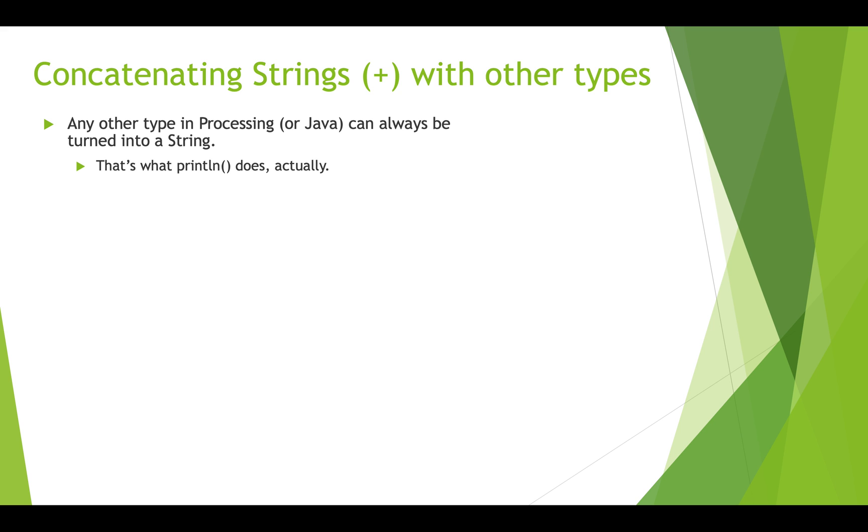So you can actually concatenate strings with other types. And that's what the print line statement actually does. And you've actually probably seen examples of this where we're trying to print out some information and then a variable and trying to get that variable. So if we have a plus b, the plus only means addition if both a and b are numeric. If one of them is a string, it's going to convert the other into a string and concatenate.